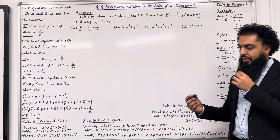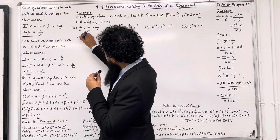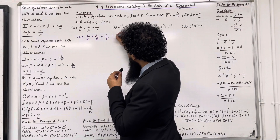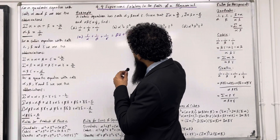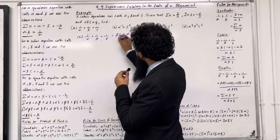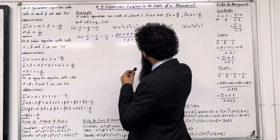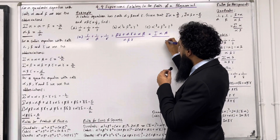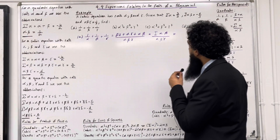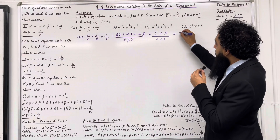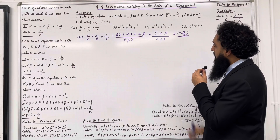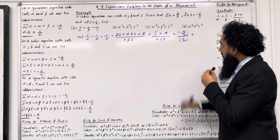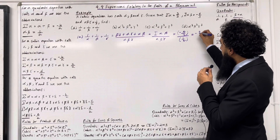Let's have a look at the solution to part A. 1 over alpha plus 1 over beta plus 1 over gamma is equal to (beta gamma plus alpha gamma plus alpha beta) all over alpha beta gamma. We can rewrite the numerator as sum of alpha beta, over alpha beta gamma. We know that sum of alpha beta is equal to minus 4 over 3, divided by alpha beta gamma which is equal to one half. So this is equal to minus 8 over 3.